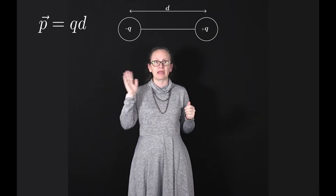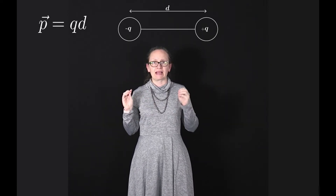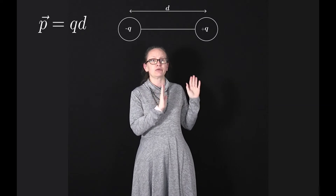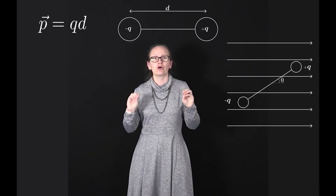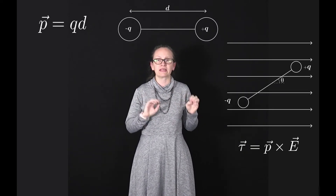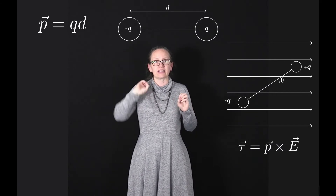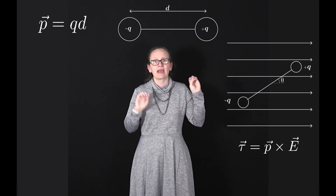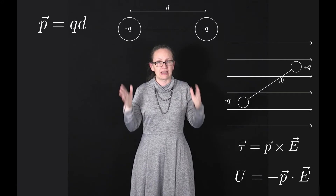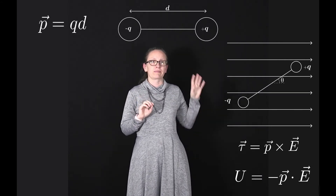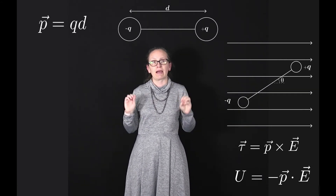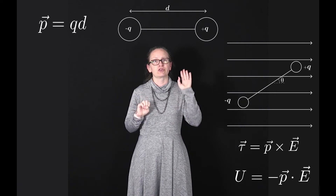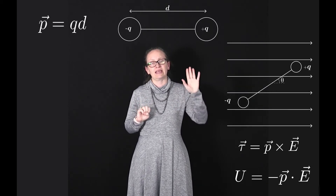We're now going to be considering magnetic dipole moments. We've seen electric dipole moments, represented by the symbol p. When we place an electric dipole moment into an electric field, the torque is given by torque equals p cross E, and the potential energy of the electric dipole in the electric field is given by U equals minus p dot E.